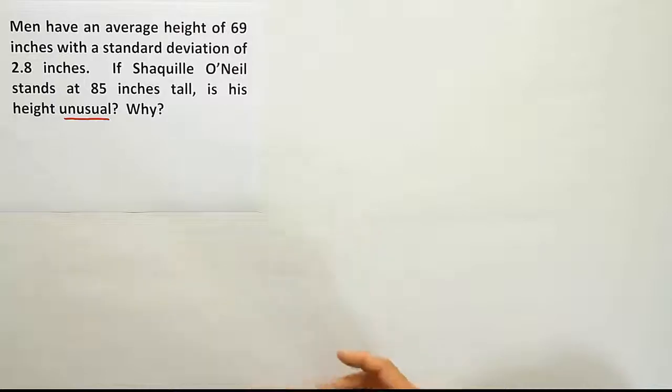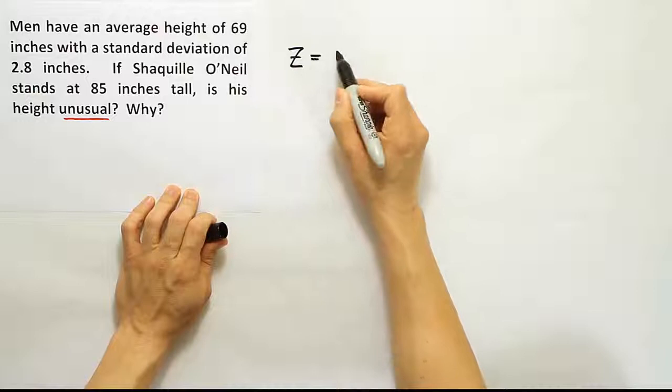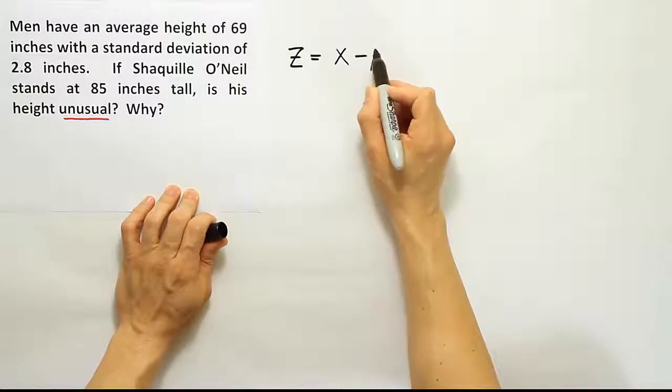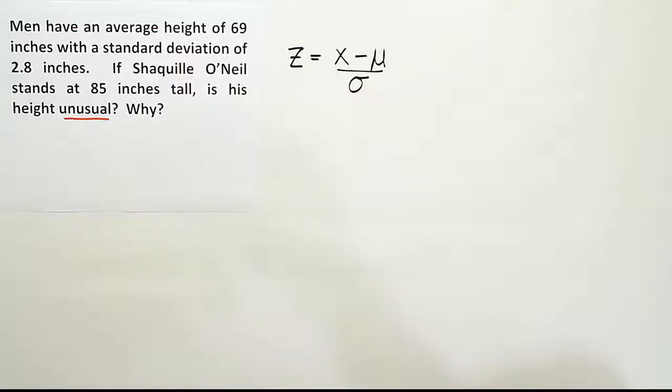So the formula, if you remember, is going to be z equals x minus the mean over sigma. This is the formula we used back in those theorems, Chebyshev's theorem and empirical rule. It's the same formula we used for k, essentially, where x just represents the number you want to convert into a z-score.